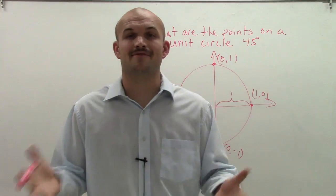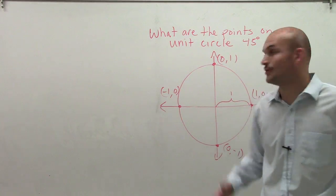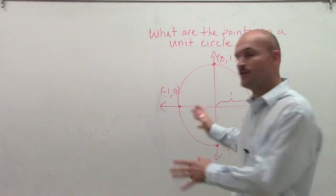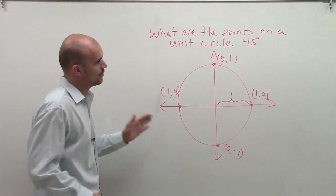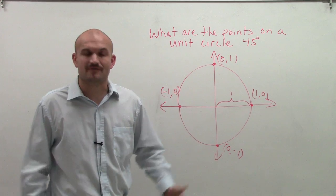So we got a definition of the unit circle, and now we ask: what are the points on the unit circle at 45 degrees? First of all, we have our four major points—these are your x and y-intercepts, and these are pretty easy to figure out.